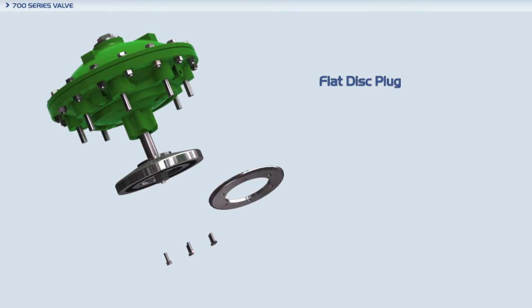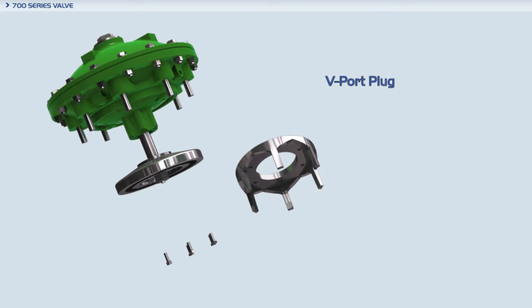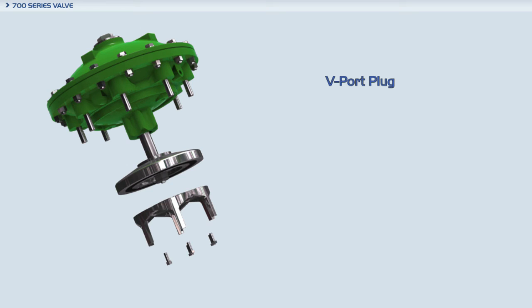The V-port plug mounts onto the standard flat seal disc by simply exchanging the standard flat seal disc washer with the V-port plug using the same set of screws.